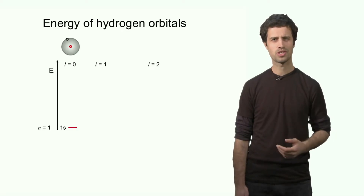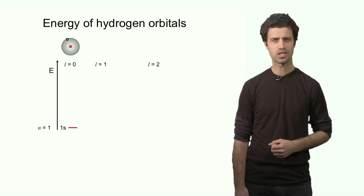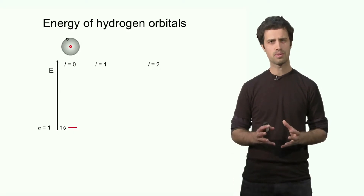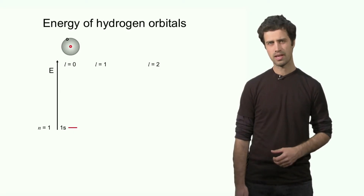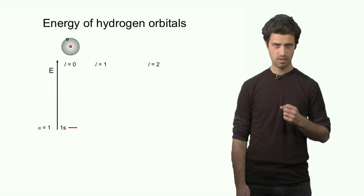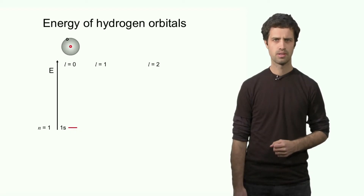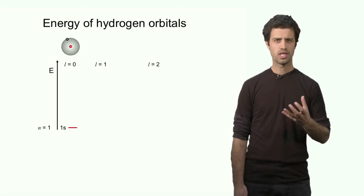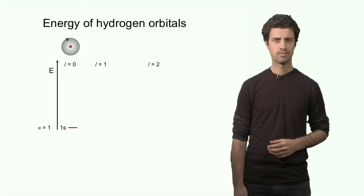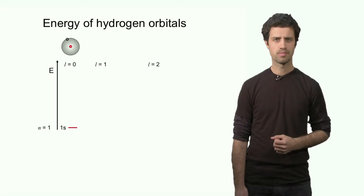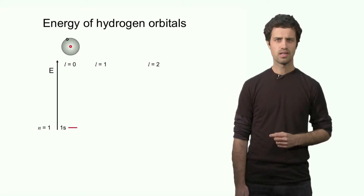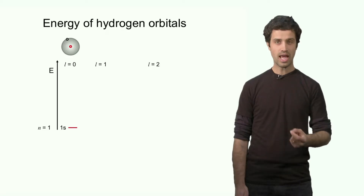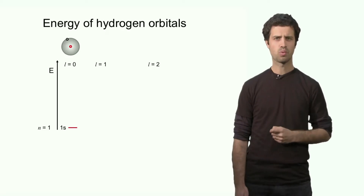The next question is: which orbital has the lowest energy? It turns out that orbitals with simpler shapes have lower energies than orbitals with more complicated shapes. The 1s orbital is very simple, and it is also the orbital with the lowest energy. So the electron in the hydrogen atom is likely to occupy the 1s orbital, the orbital with the lowest energy.